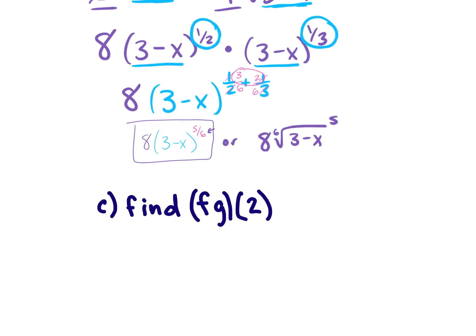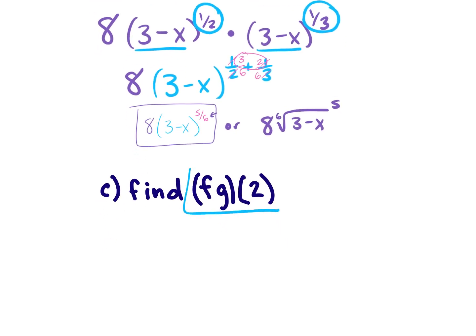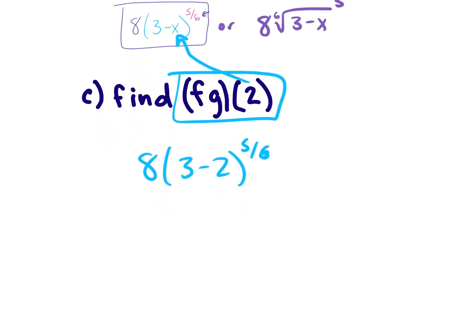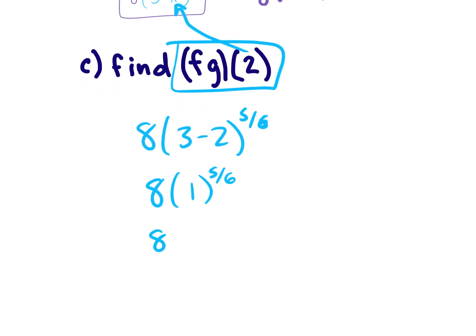Next, find f times g of 2 by plugging 2 into x. So we have 8 times (3 minus 2) to the 5/6 power. Following PEMDAS, do the parentheses first: 3 minus 2 equals 1. Then 1 to the 5/6 power is 1. So this is 8 times 1, which equals 8.